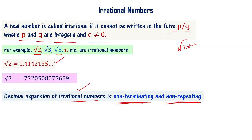Root 2 is irrational and root 3 is irrational. Suppose if I have to prove root 2 or root 3 as irrational numbers, I can first show their decimal expansion is non-terminating non-repeating. For example, root 5 is also a non-terminating non-repeating irrational number.